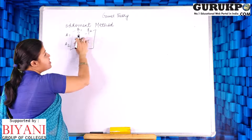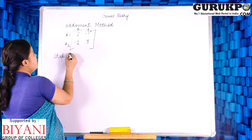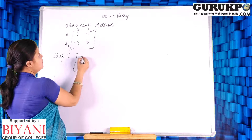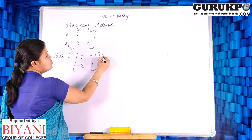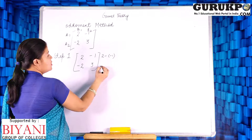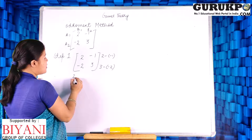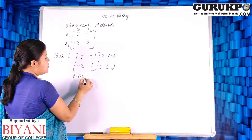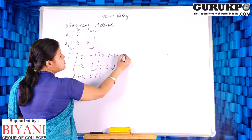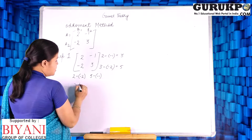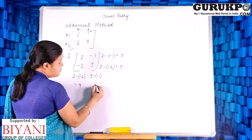The first step is to subtract the least element from the other element. That is: 2 minus (−1), 3 minus (−2). In the same manner, subtract the least element from another element: 3 minus (−1). This gives us 3, 5, 4, and 4 — since minus into minus is plus.